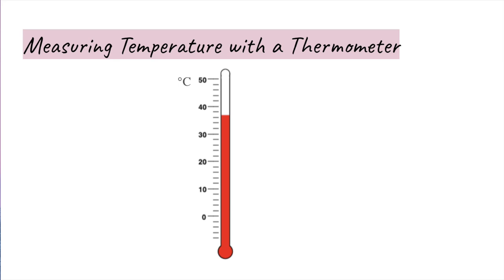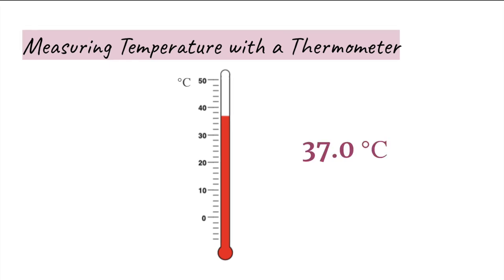First, determine the increment of the scale. Notice that each line goes up by a value of two degrees Celsius. We can say that the liquid in the thermometer is halfway between 36 and 38 degrees Celsius, so the value is represented as 37.0 degrees Celsius. Since this thermometer measures to the one's place, we estimate one decimal place further to the tenths place. Note that 37.0 degrees is more precise than simply saying 37, 36, or 38.